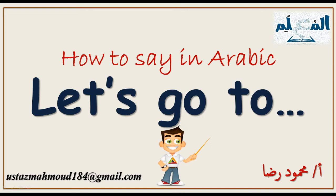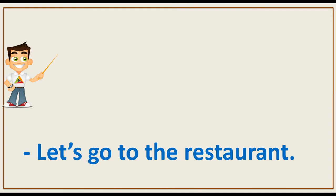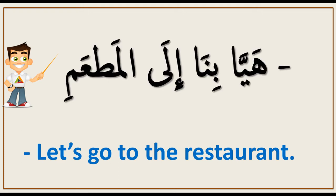As we usually do, we take some examples before we start. Let's go to the restaurant — how to say that in Arabic language? We say in Arabic: 'Hayya bina ila al-mata'am.' 'Hayya bina ila' means 'let's go to' and 'al-mata'am' is 'restaurant' or 'the restaurant.'